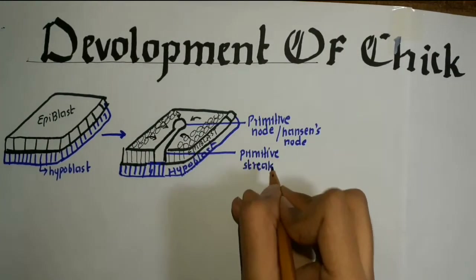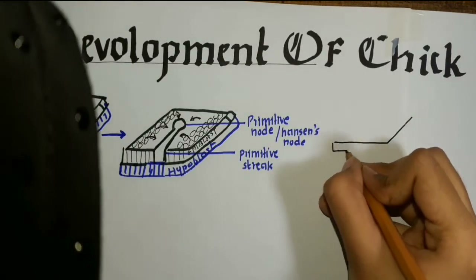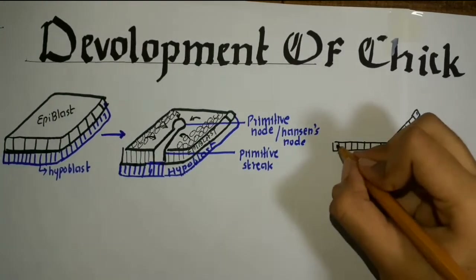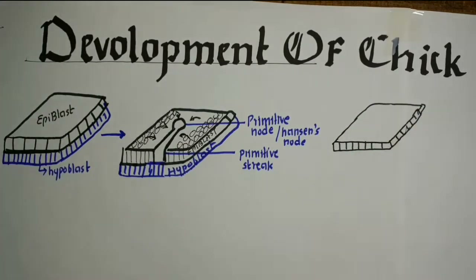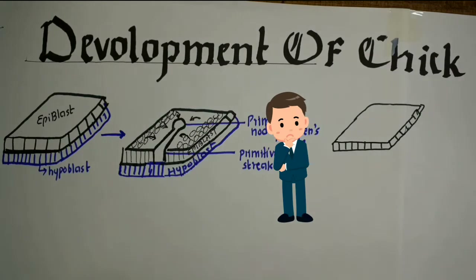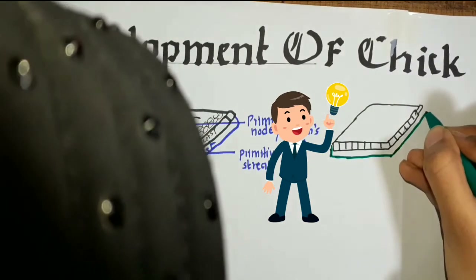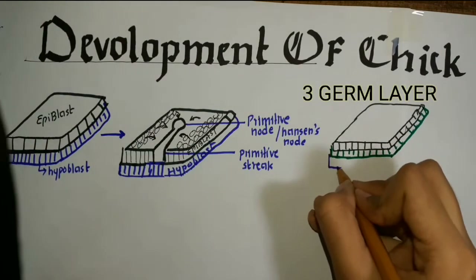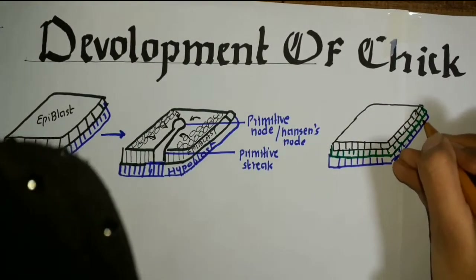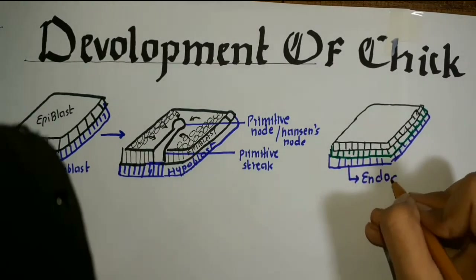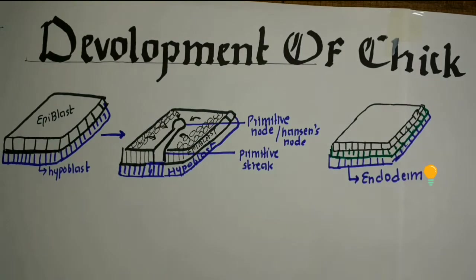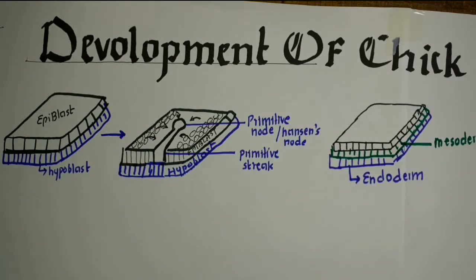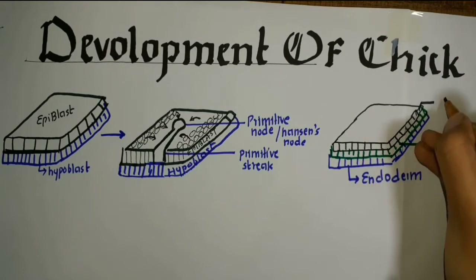All the cells from the epiblast move downwards and we get three germ layers. The important point to note is that only the cells from the epiblast move through the primitive streak, and as a result we get three germ layers: ectoderm, mesoderm, and endoderm. The innermost layer is the endoderm, the middle layer is the mesoderm, and the uppermost layer is the ectoderm.